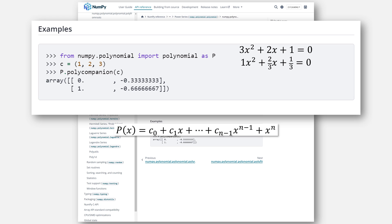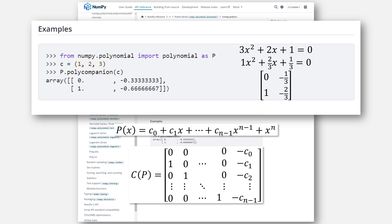And then, when your polynomial is of this form, this is the structure of the companion matrix, resulting in the matrix of 0, negative 1 third, 1, negative 2 thirds.